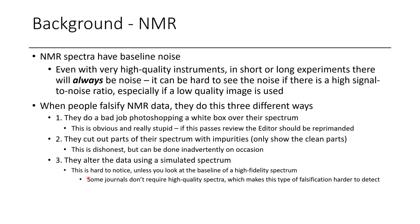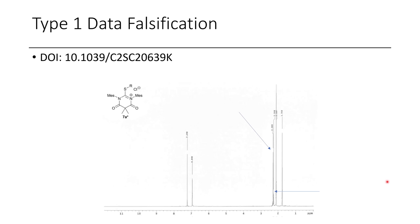The third way — the most sneaky — is using simulated spectra in Mestrenova. This is really hard to notice unless you look at the baseline of a high-fidelity spectrum. Because most journals don't force you to provide high-quality spectra, it makes it harder to detect. If someone was really clever, they could even hide this by adding layers of fake baseline. But if someone's cheating, it probably means they're not competent in the first place — otherwise they wouldn't be cutting corners.